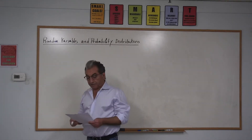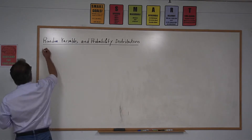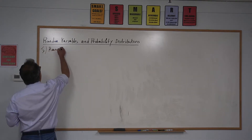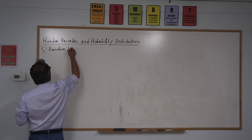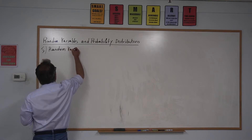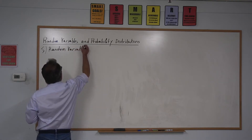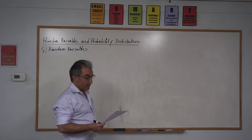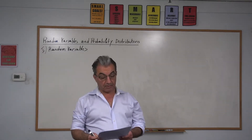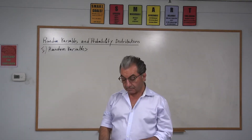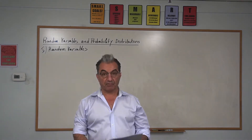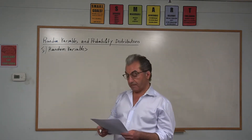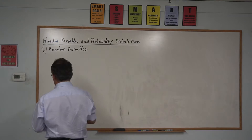First, random variables. What is a random variable? A random variable is a variable written as X.